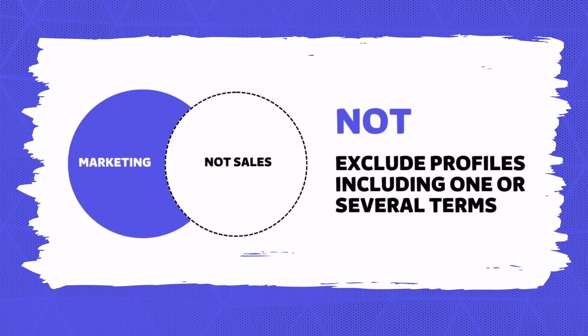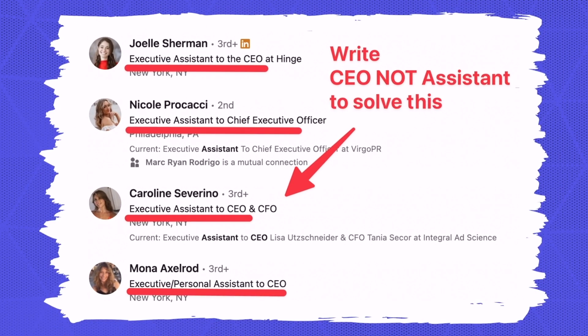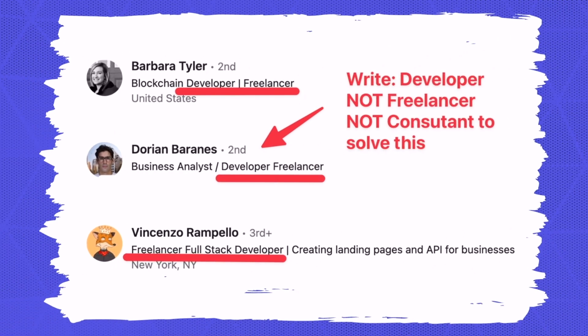Using NOT, you are telling LinkedIn to exclude all profiles containing a specific keyword from your search results. For example, write 'CEO NOT assistant' because if you use the job title filter to look for CEOs, 'assistant to the CEO' will include the keyword CEO in the job title — and those people are not decision makers. Same thing if you are a recruiter hiring developers: write 'developer NOT freelancer NOT consultant' because you want people ready to take a full-time job.